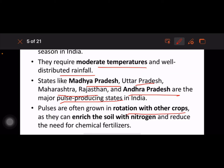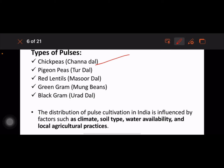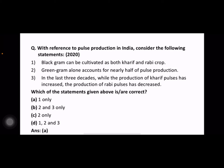There are many types of pulses like chickpeas, pigeon peas, red lentils, green gram, and black gram. The distribution of pulse cultivation in India is influenced by factors like climate, soil type, water availability, and local agricultural practices. In 2020, a question was asked with reference to pulse production in India.